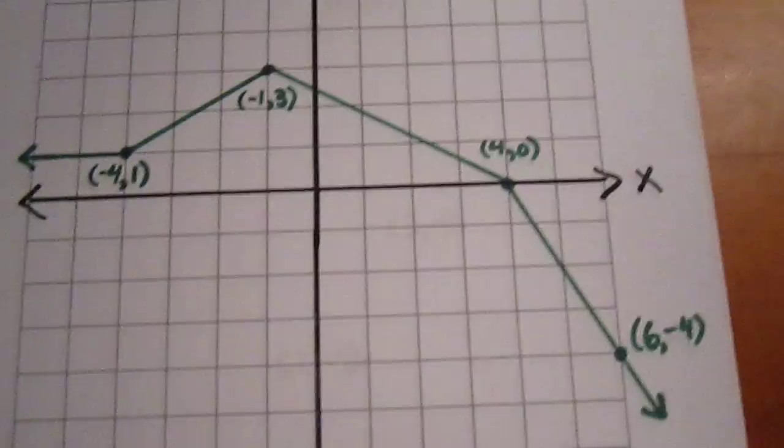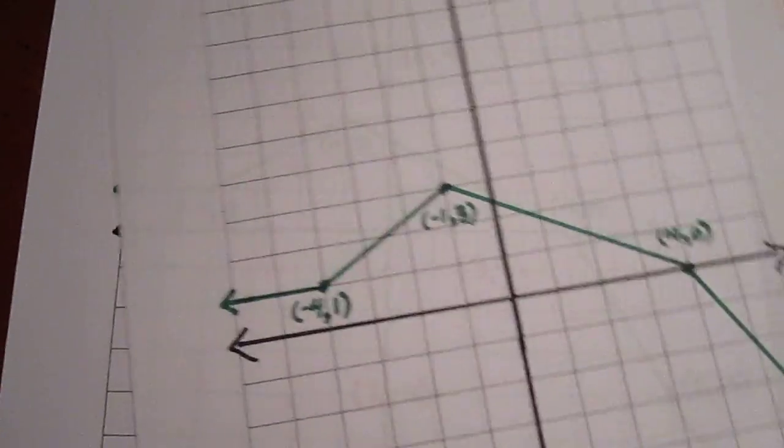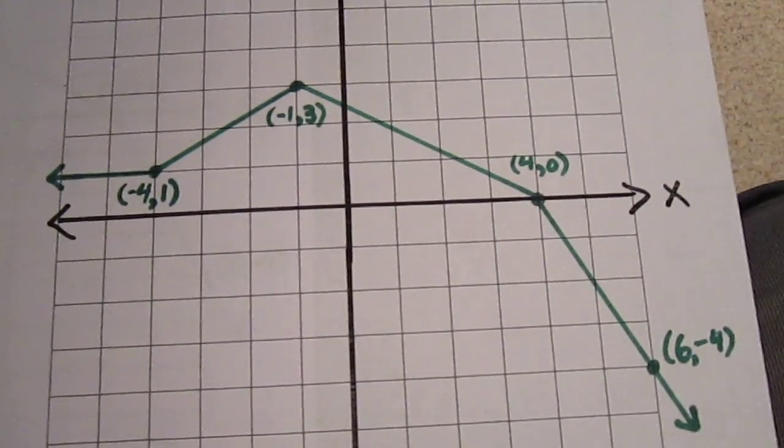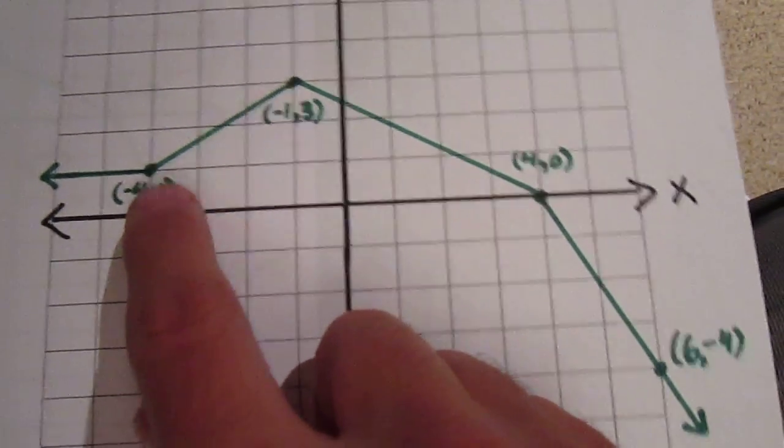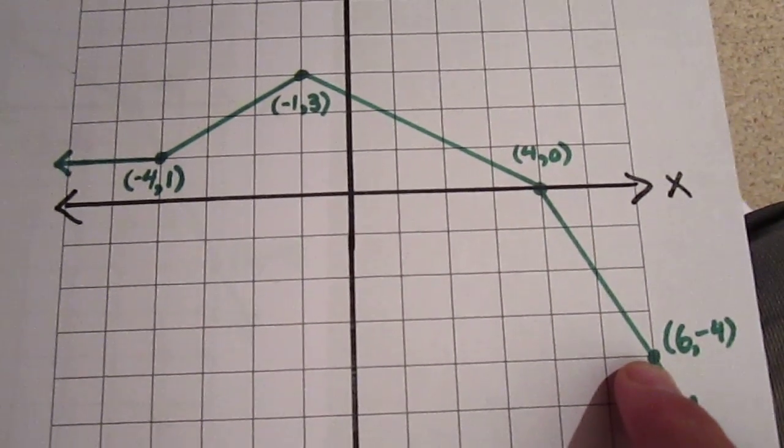So we look at the graph itself, and there it is. And it would seem that we are given certain critical points. We know the point negative 4, 1, negative 1, 3, 4, 0, and 6, negative 4.